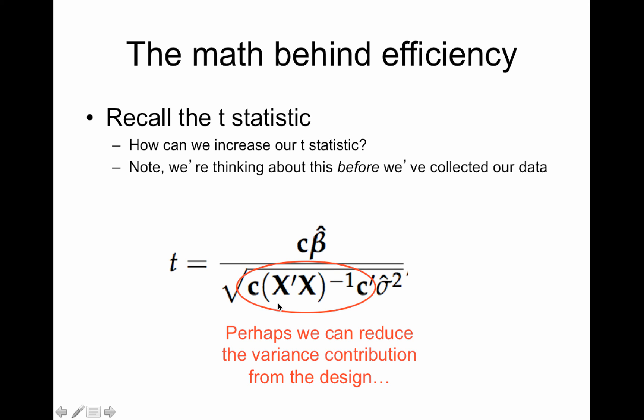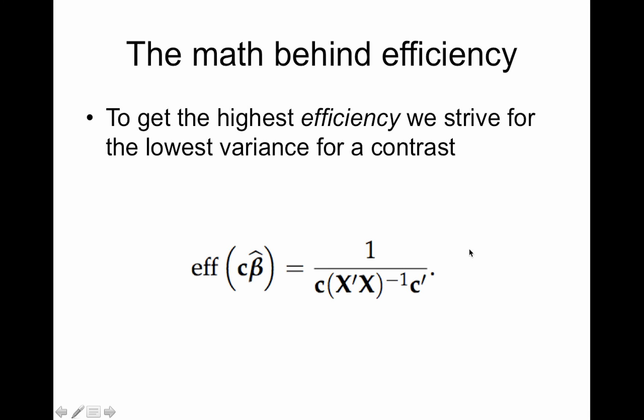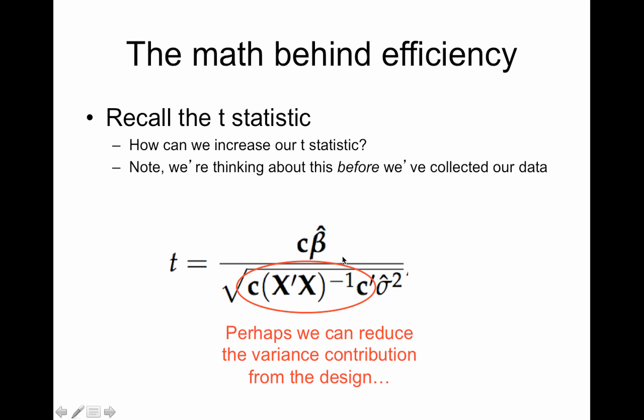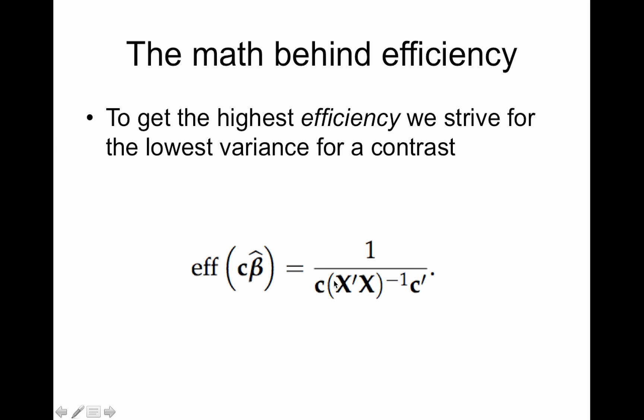So since this is the only thing we can control before the study, let's try to reduce the variance contribution from the design. So we're going to reduce the chunk that's circled in red here. And we call that the efficiency. So the efficiency for a contrast, C beta hat, is one over that chunk. So basically, I took the T statistic and I just got rid of this part and this part. And you're left with efficiency. So our goal is to get the highest efficiency, and that will hopefully lead to the best statistic possible.